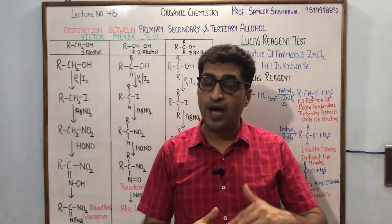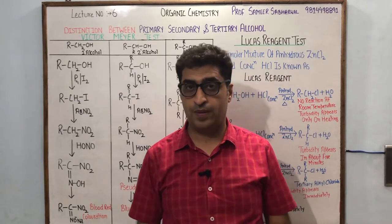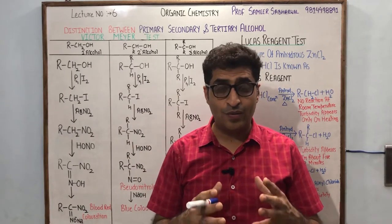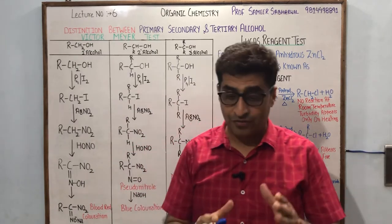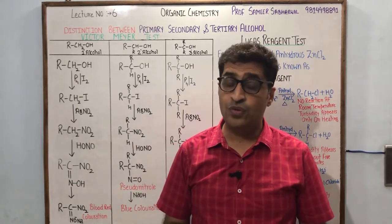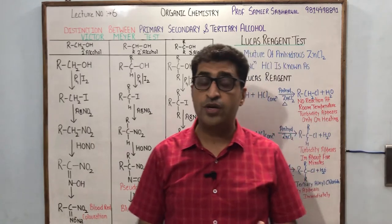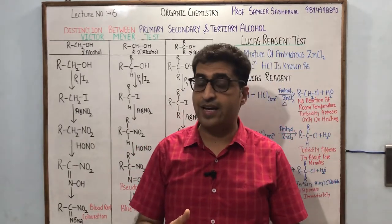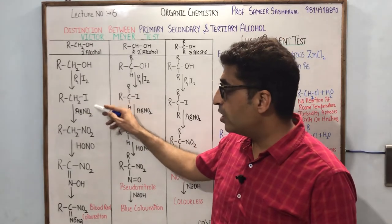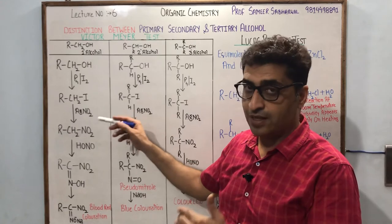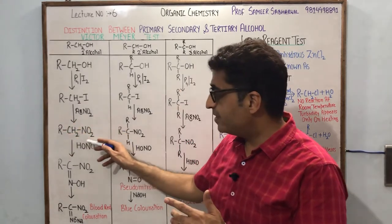Whenever we want to get something we generally go through haloalkanes, because haloalkanes have a halide group which is a very good leaving group. We call haloalkanes synthetic tools in the hands of a chemist. Once we get RCH2I, we go for nucleophilic substitution a second time — we replace I negative with NO2 negative. Using silver nitrite in aqueous and alcoholic medium we get RCH2NO2, the nitroalkane.